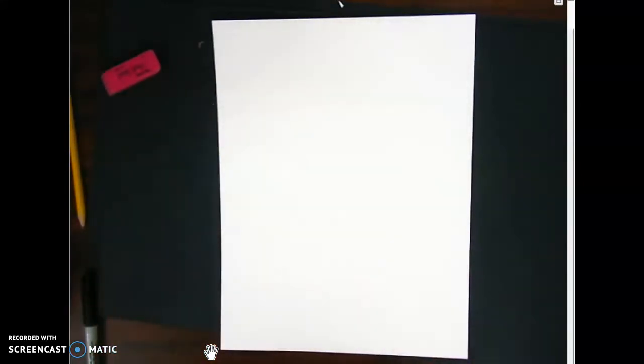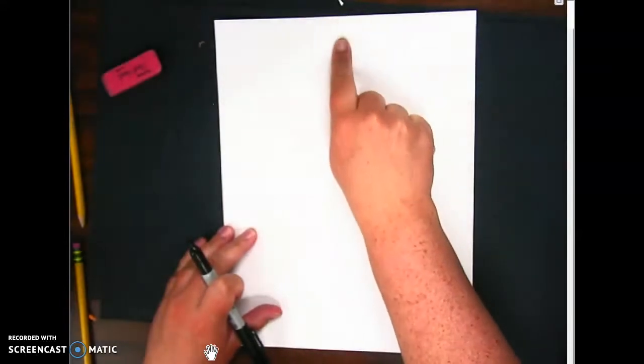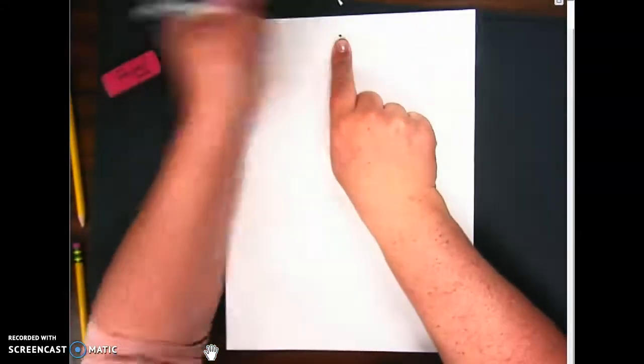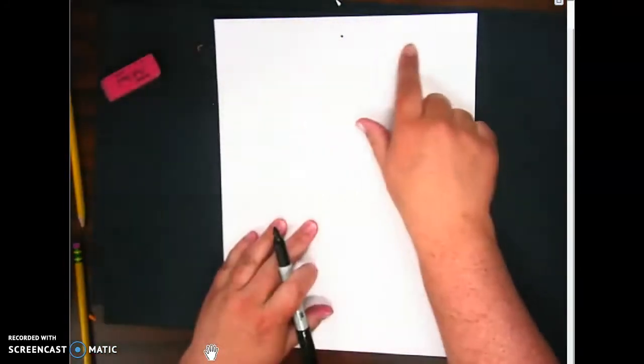But I'm going to draw in sharpie just so that you can see a little bit better today. All right, let's get started. Put your finger at the top of your paper in the center and bring it down a little bit. We want to draw our shield as big as we can to fill our paper.